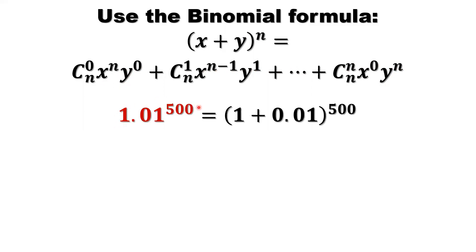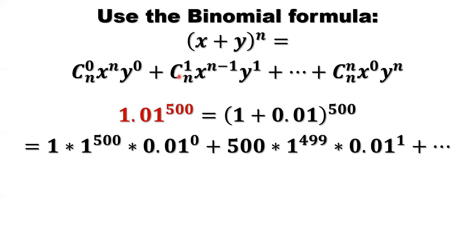Now look at our question. We convert our number into this format so that we can use the binomial formula. So 1.01 equals 1 plus 0.01. So 1 is our x, 0.01 is our y, 500 is our n. Plug into this formula.